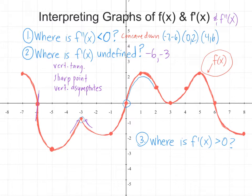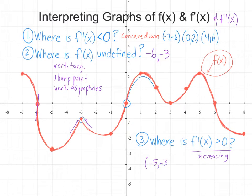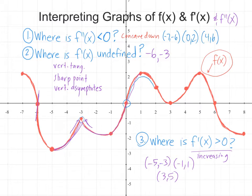My final question about this graph of f of x is where is f prime of x greater than zero? f prime is the derivative — it tells us the slope. Where f prime is greater than zero, that's when my slope is positive or my function is increasing. So I want to list the intervals where this function is increasing: it increases from negative five to negative three, then it decreases for a little while, then it increases from negative one to one, and it increases from three to five. There are three examples of questions that could be asked based on looking at a graph of a function, but we want to focus most of our time on a graph of f prime.